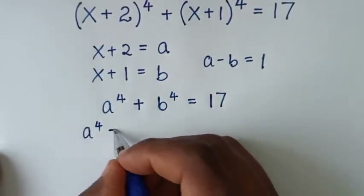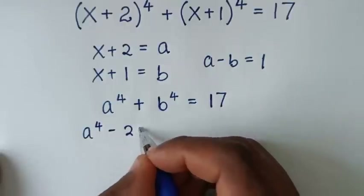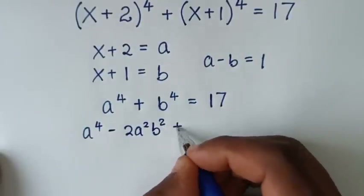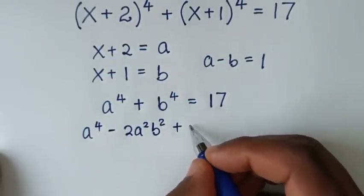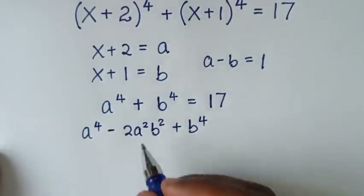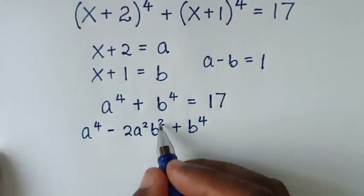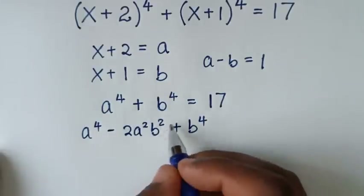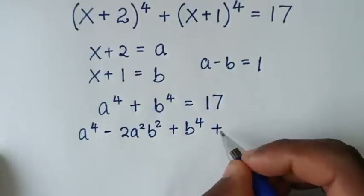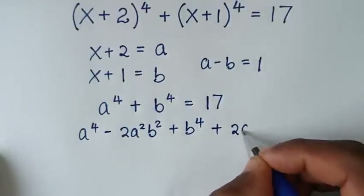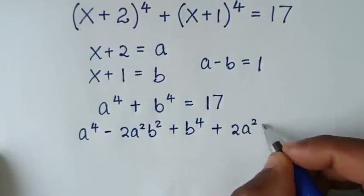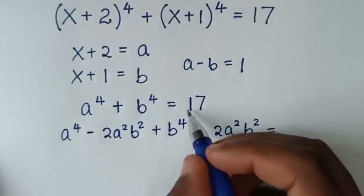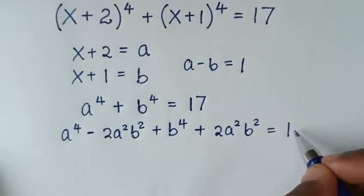...then we subtract 2a²b², then plus b⁴. Because we subtracted this from the equation, we will also add 2a²b², so it will be equal to 17.